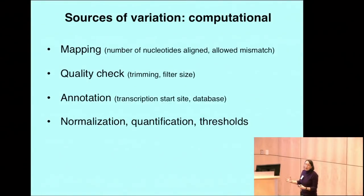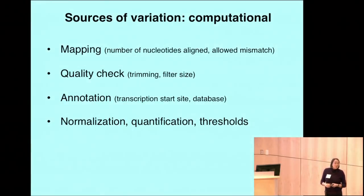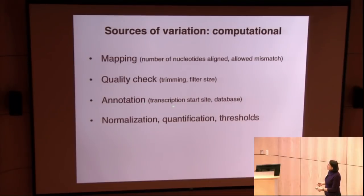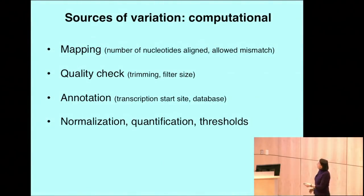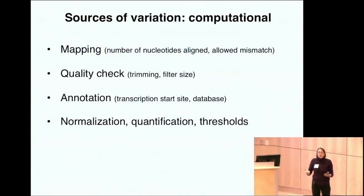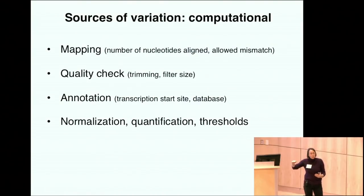Then there are computational sources of variation that also need to be considered. Some of the places where variation could be introduced are: the mapping, quality checks, how groups examine the quality of the data, the annotation and the sequence against which data is aligned, how they annotate promoters, normalization, quantification, and thresholds — all of which can have an impact on the number of transcripts considered as antisense RNAs. One group may set their threshold at one point, another group at another point.